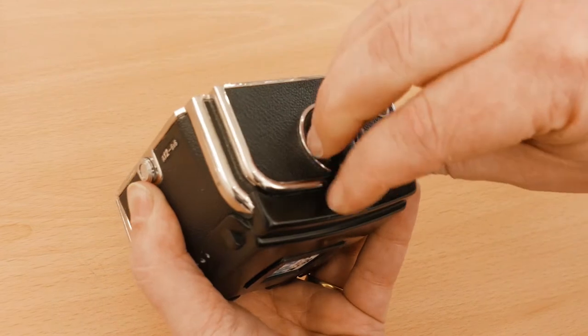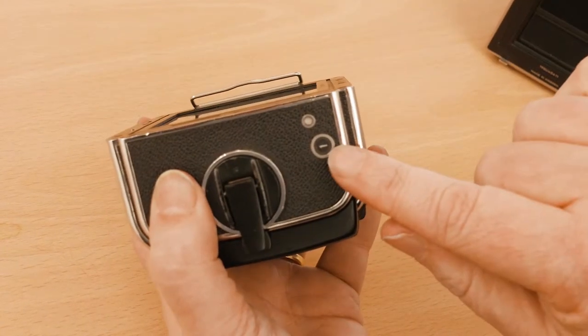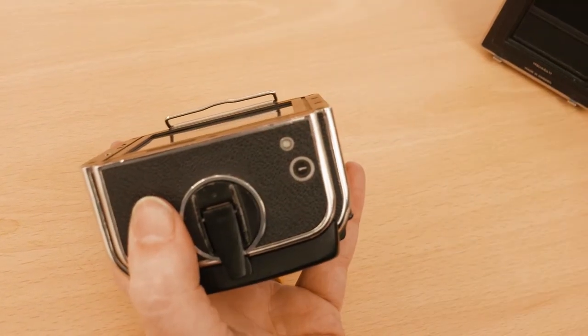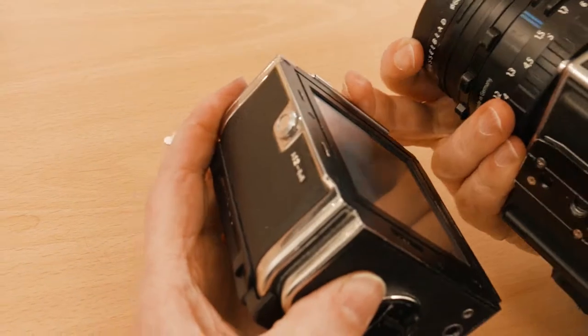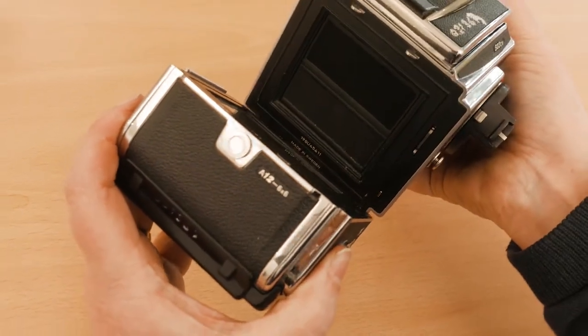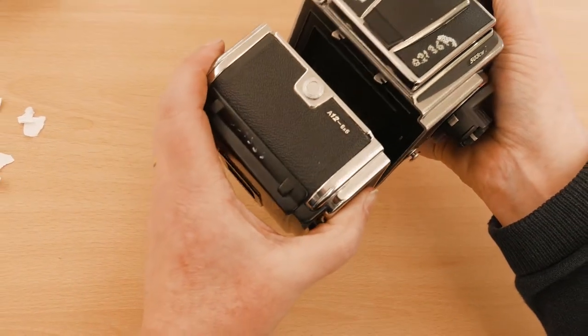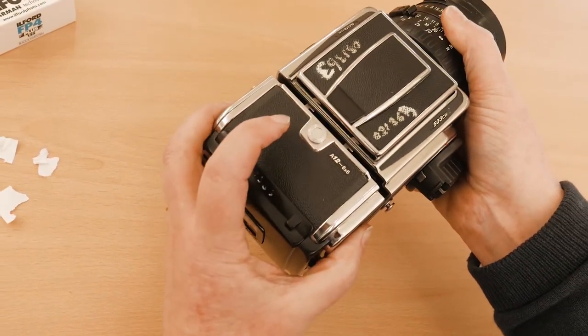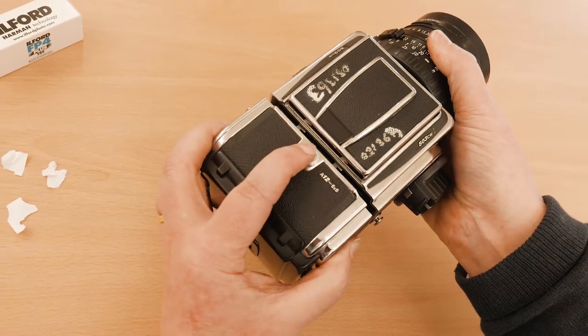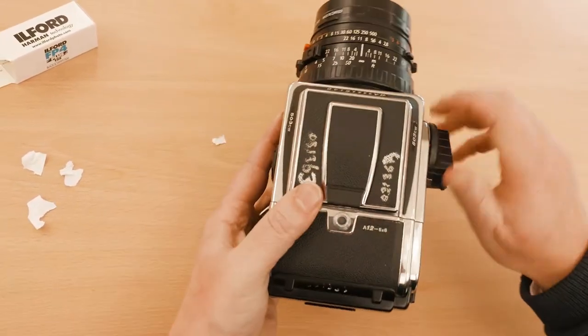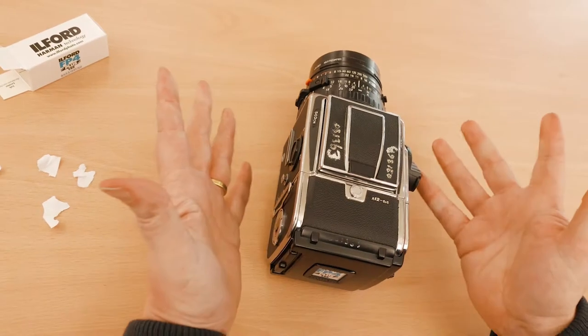I can then wind that back round out of the way. Notice how I've got number one. Once I've got that position, I can then put the film back onto the camera, making sure I put the bottom in first. Come up, don't just snap it closed, actually push that across like so and there it's ready to go.